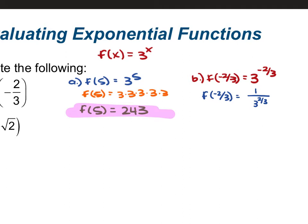With a rational exponent, your numerator is the power and your denominator is the index. So this is telling you f of negative 2 thirds is equal to 1 over the cube root of 3 squared. Well, 3 squared is 9, so this is the same thing as saying f of negative 2 thirds is equal to 1 over the cube root of 9.